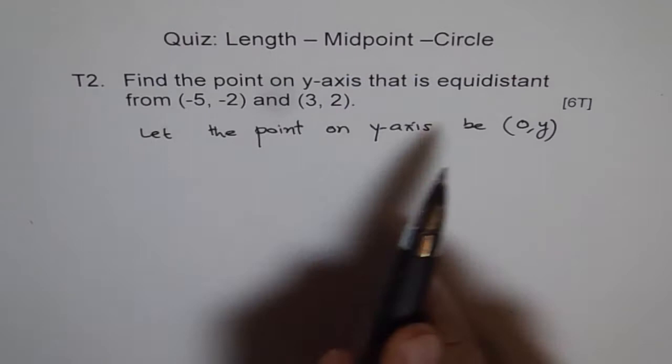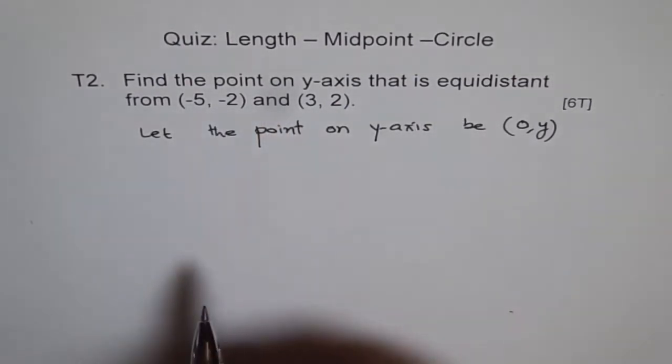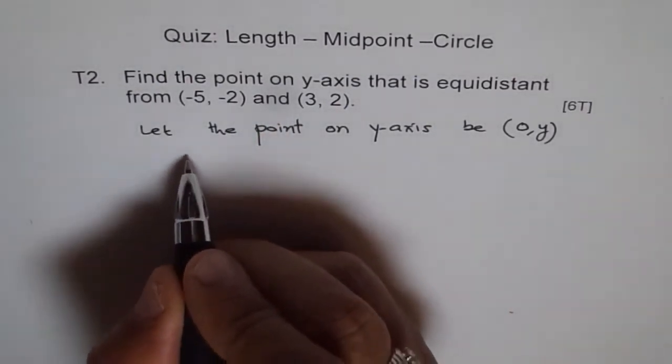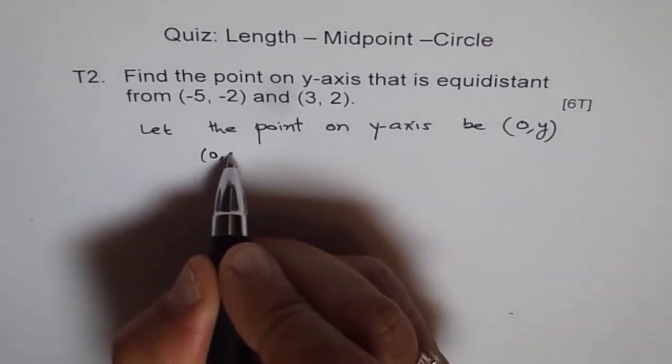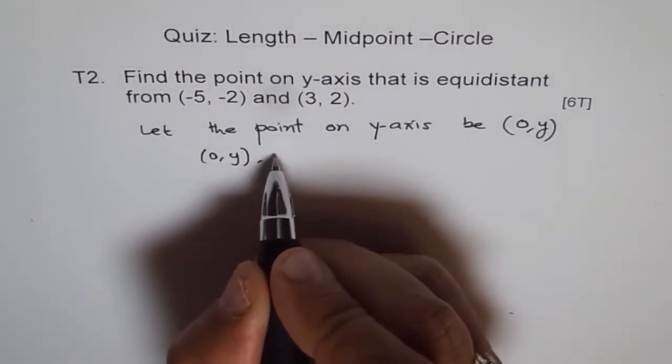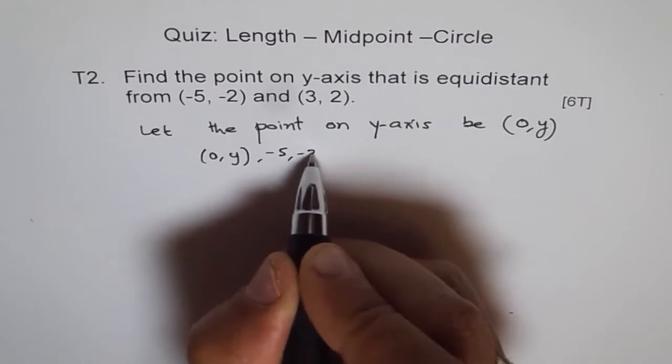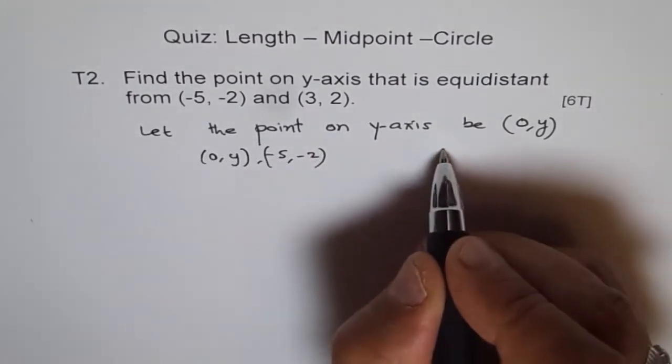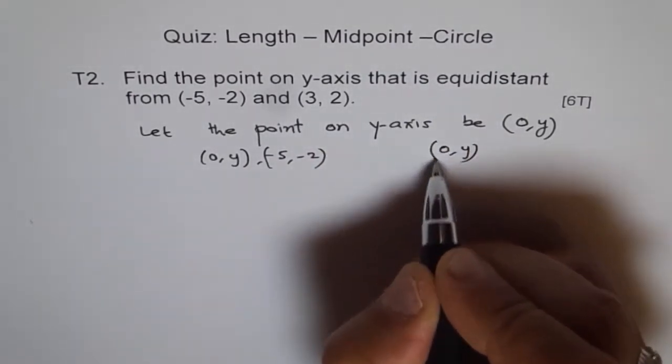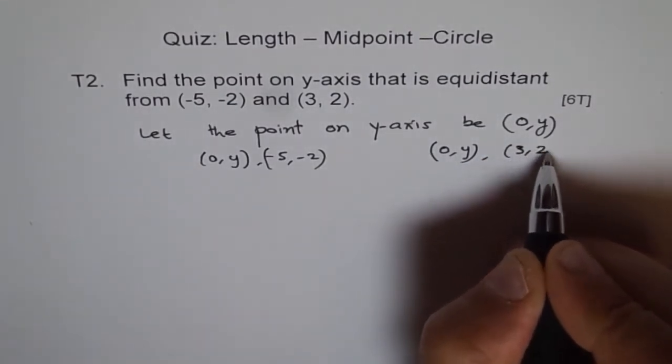Now we say equidistance means same distance from this and same distance from that. So let's say distance of this point (0, y) from the point (-5, -2) should be same as distance of this point from (3, 2).